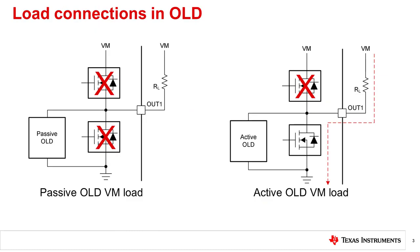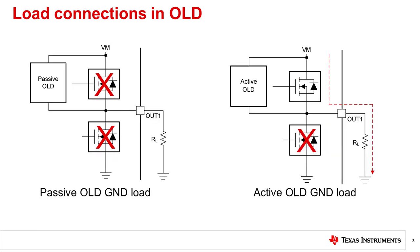Both passive and active OLD can accept three load connection types. One is a load connection to power, and another is a load connected to ground. Passive OLD functions similarly in both connection types. The difference is the passive OLD detection circuitry that turns on is the one in parallel to the FET through which the diagnostic current will flow. In active OLD, the load current flows through the FET that is turned on instead of the diagnostic current.